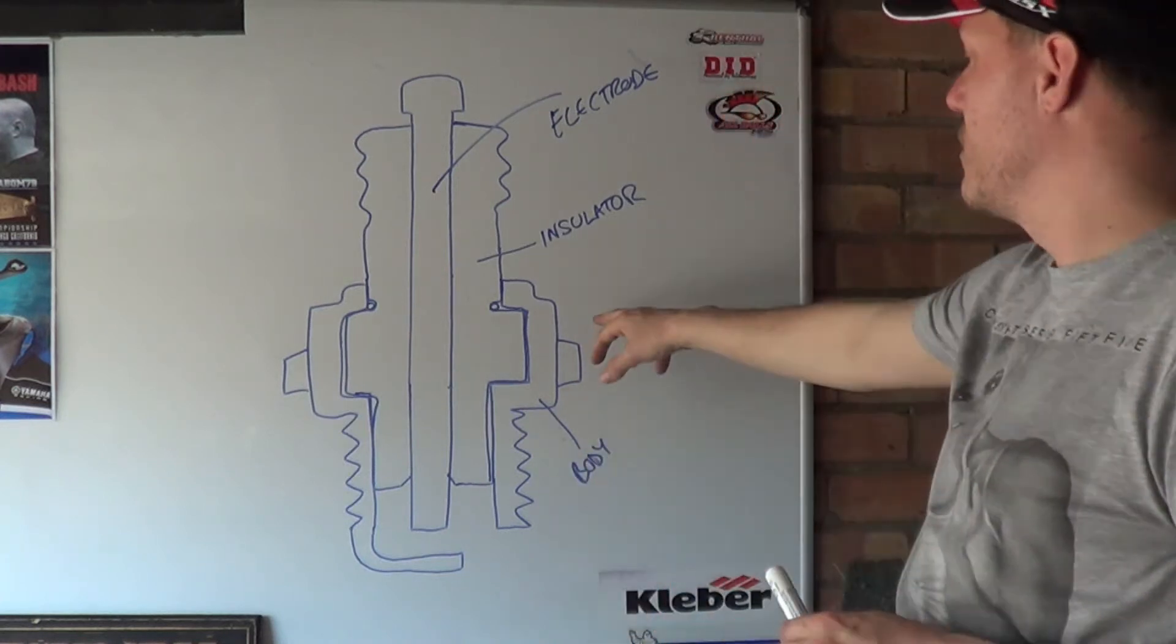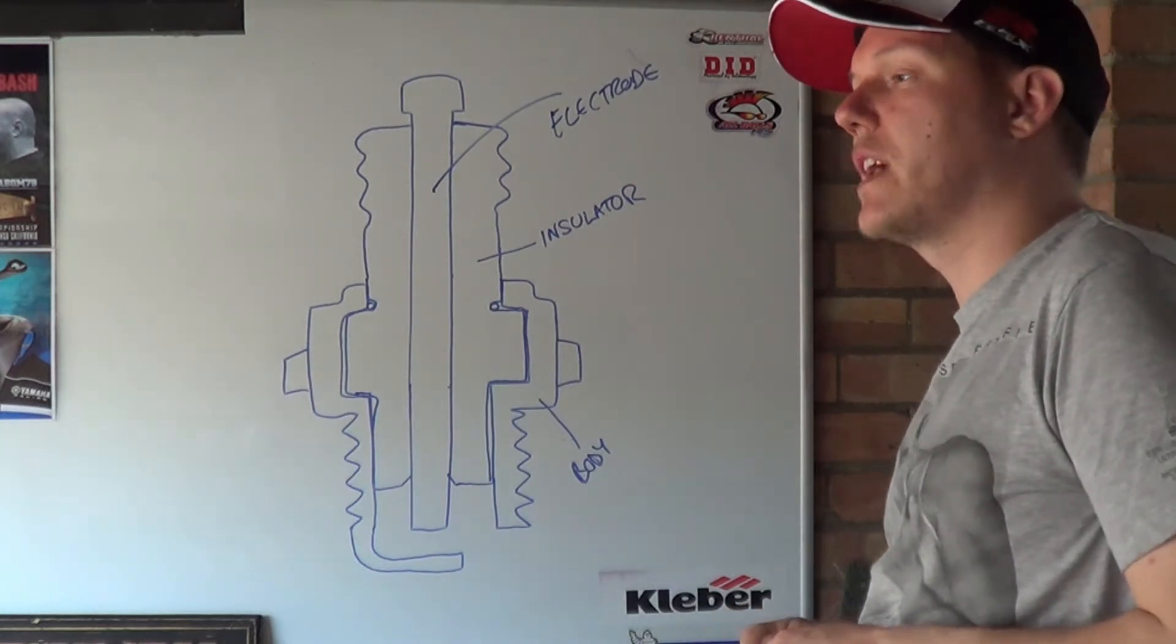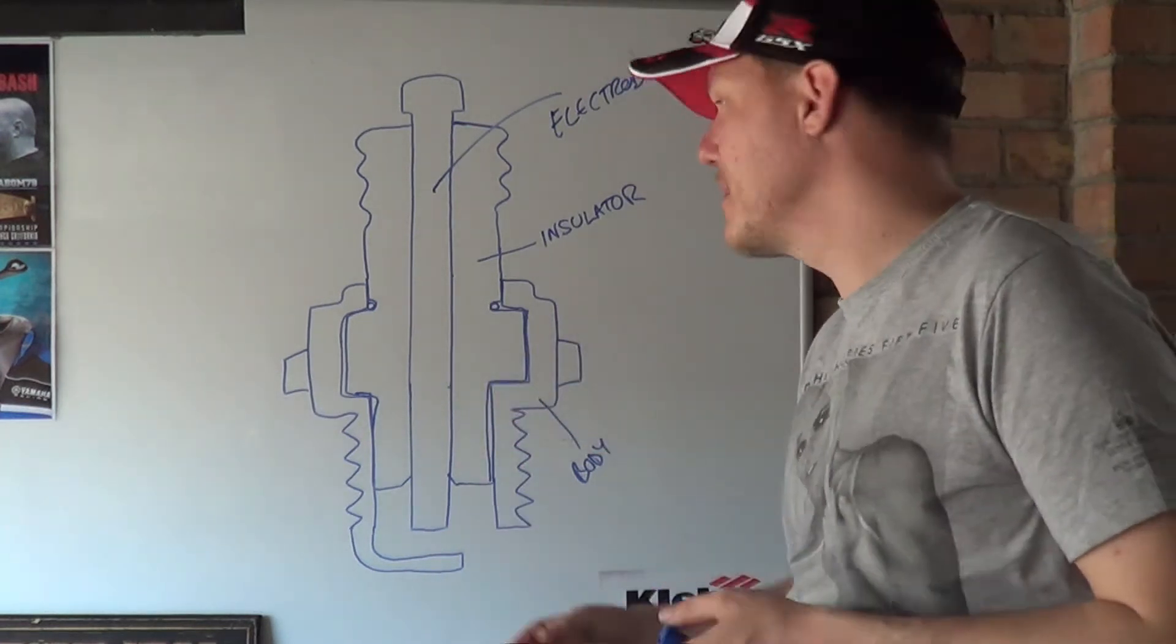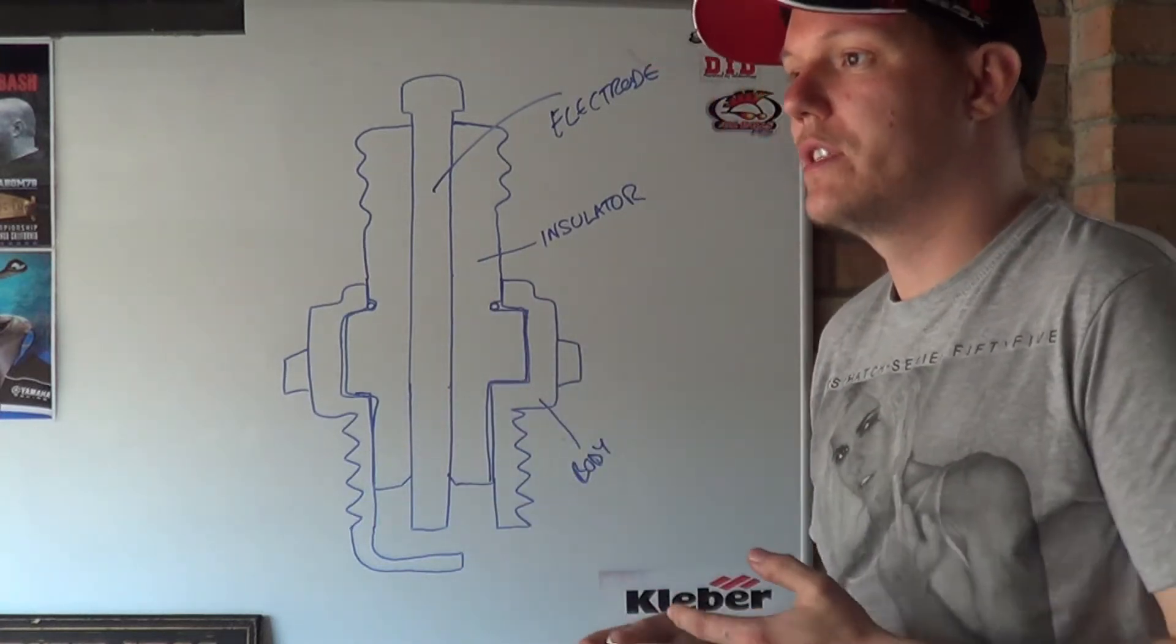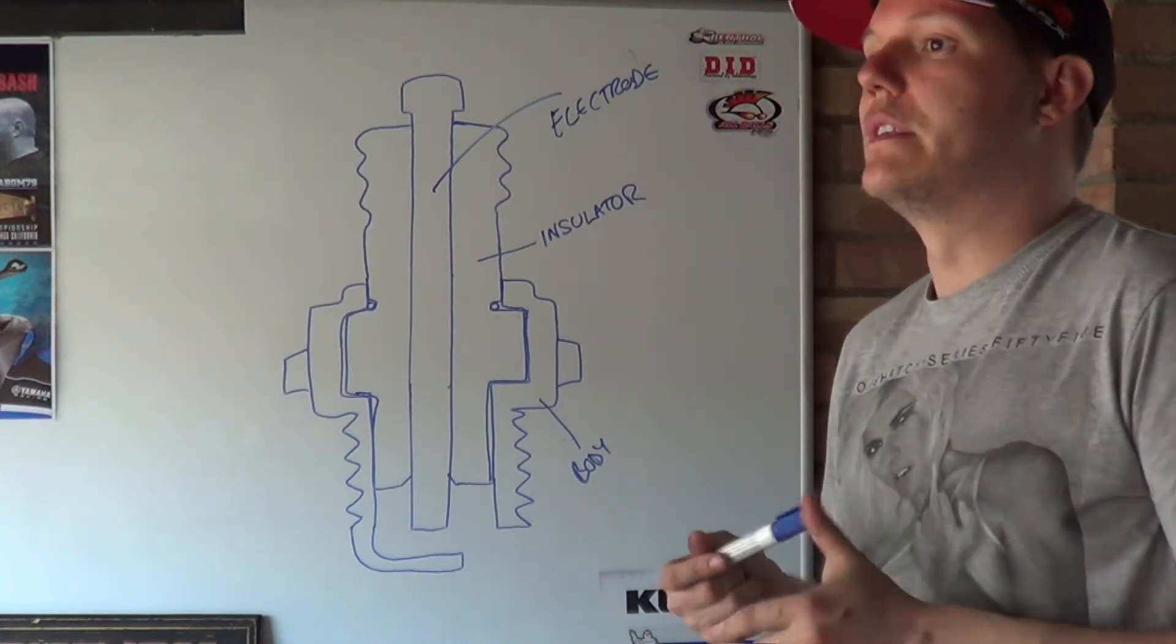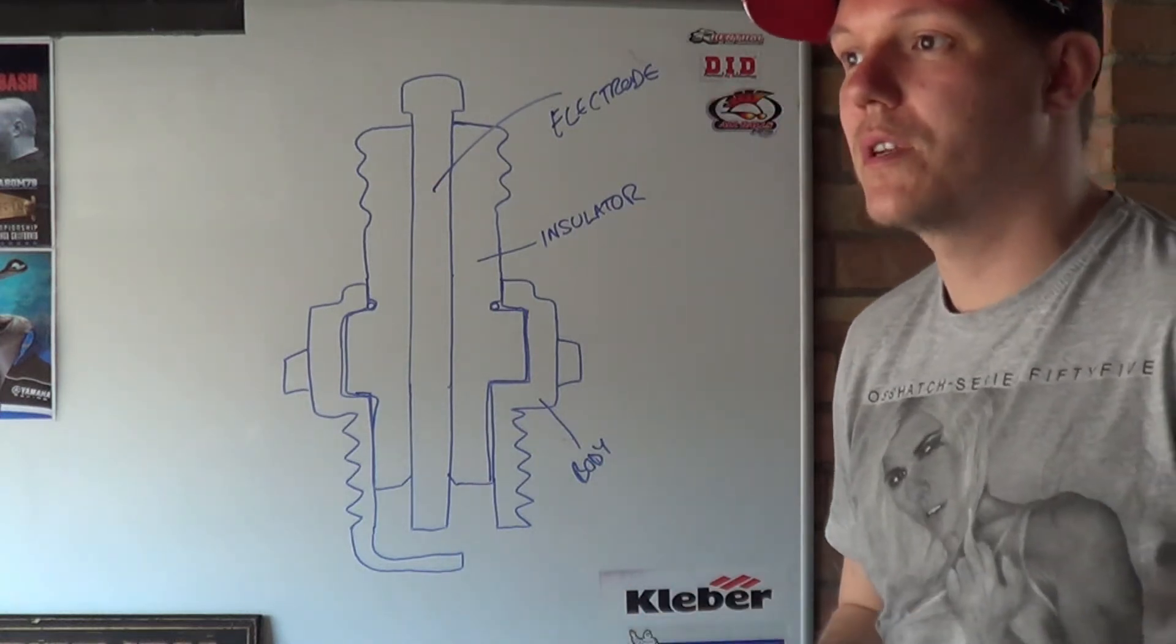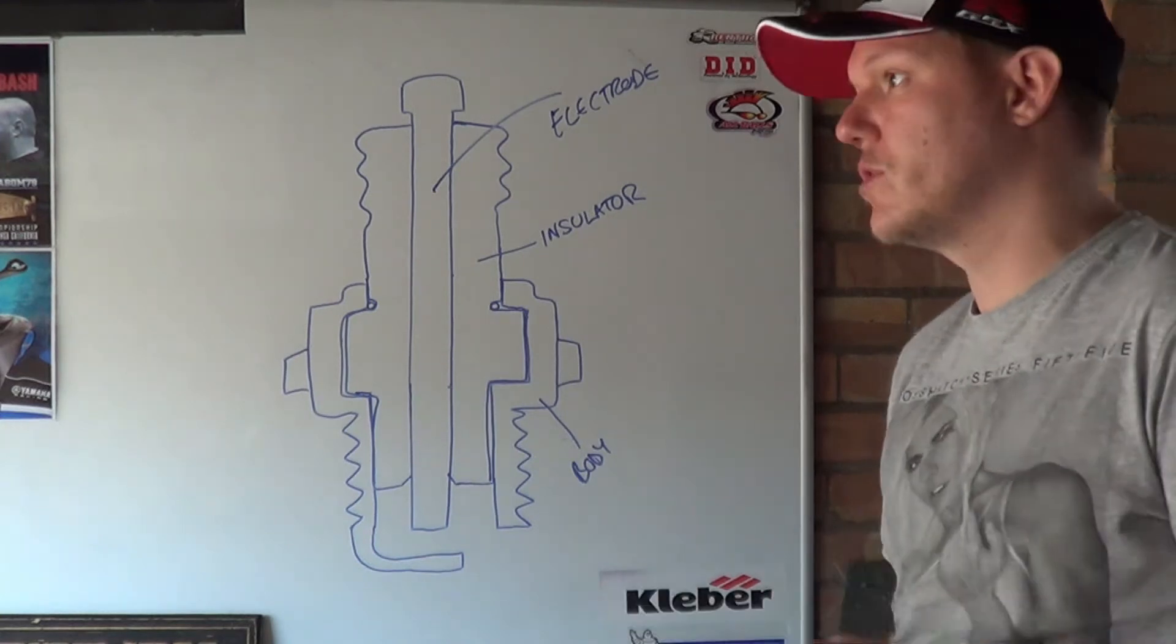So your bodies are generally made out of steel and generally it's galvanised, either nickel plated or zinc plated. Your insulator is porcelain, so it's a ceramic, and your electrode can range from nickel alloys, chrome, palladium, yttrium, iridium, platinum. There's loads of different kinds of electrodes they can use. Back in the day they used to use copper and before that carbon rods, carbon electrodes.